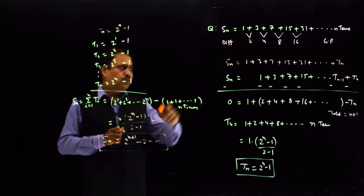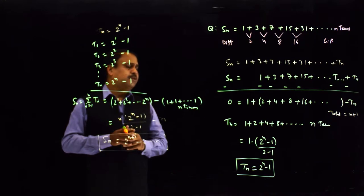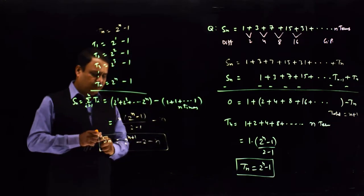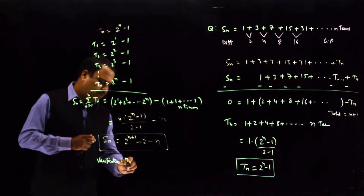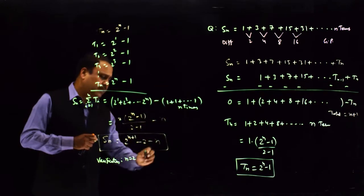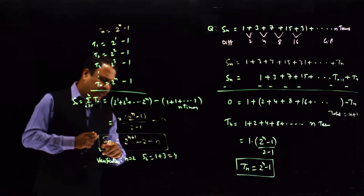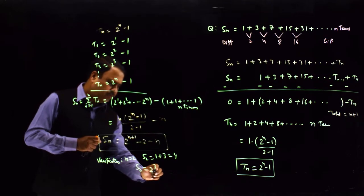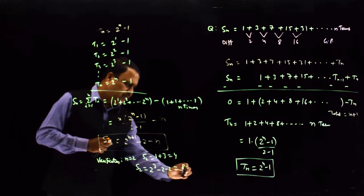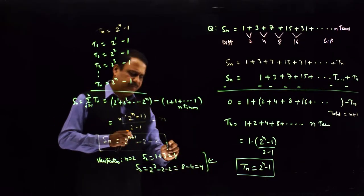Verification: for n equals 2, the answer must be 1 plus 3 equals 4. Putting n equals 2 in the formula: S₂ equals 2 raised to power 3 minus 2 minus 2, which equals 8 minus 4, equals 4. Verified — this is the correct answer.